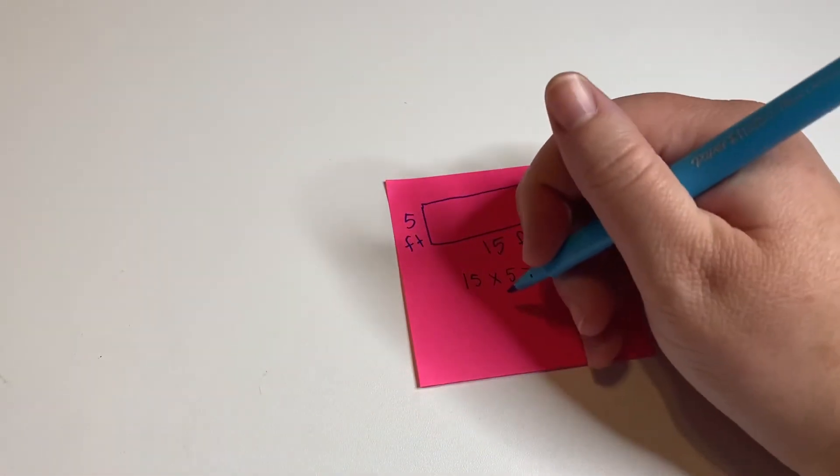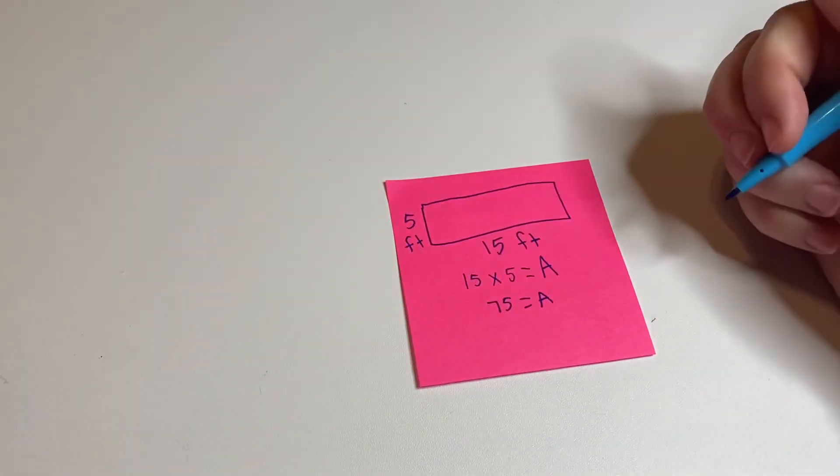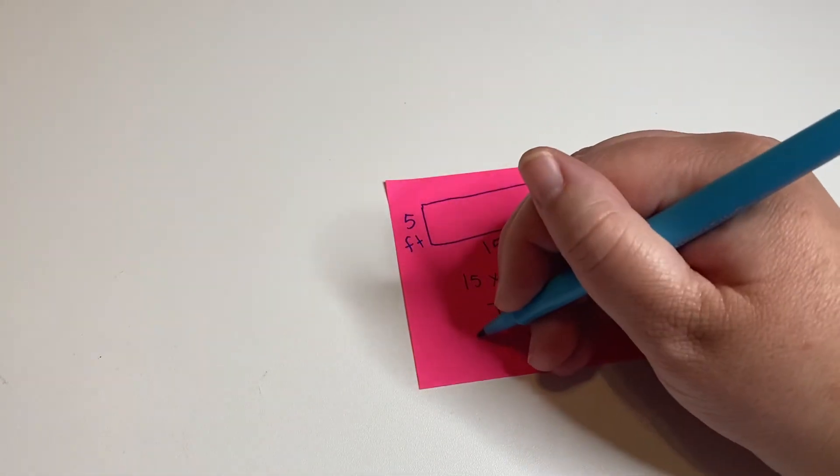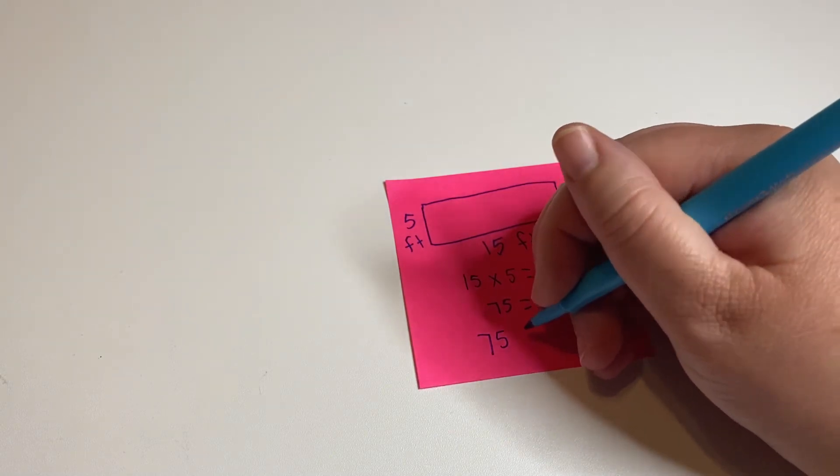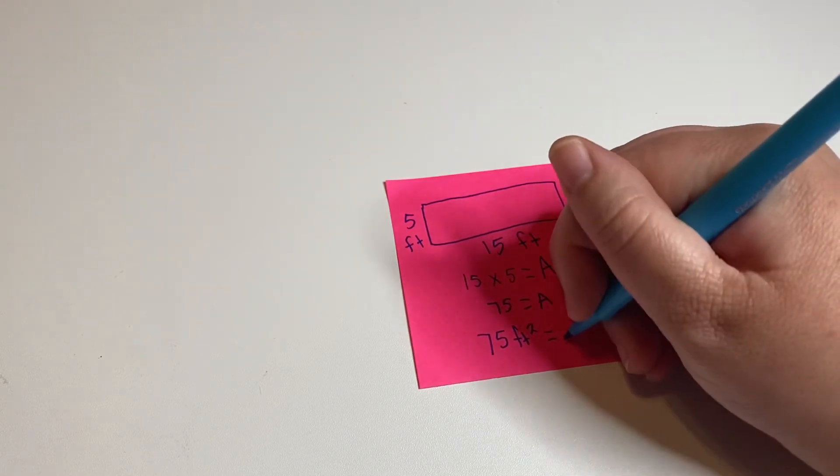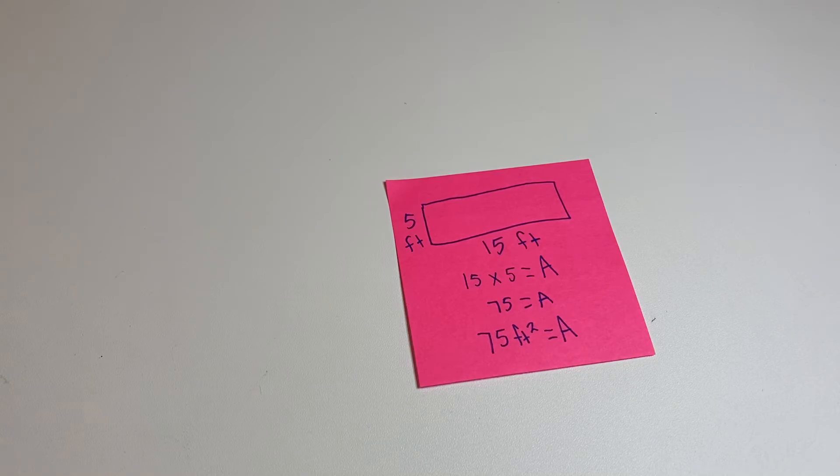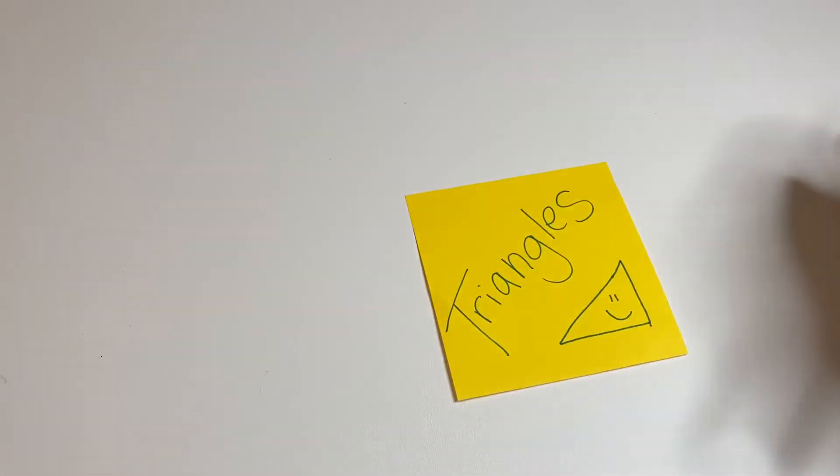So 15 times 5 is 75, which is equal to the area. And it's not just 75 one dimension, it's 75 in two dimensions. So it is 75 feet squared or square feet is equal to the area. Okay, so that was one example for that.